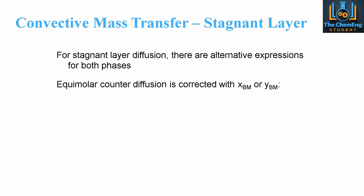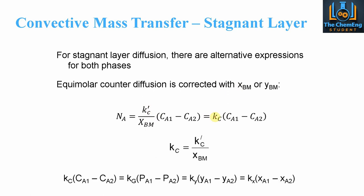For stagnant layer diffusion there are alternative expressions for both phases. The equimolar counterdiffusion equations are corrected using the XBM or YBM correction factors. This allows us to express KC — the overall mass transfer coefficient — rather than the local k'c. If we don't know the overall mass transfer coefficient, we need it in a localised sense. This same approach applies to all variations of the equimolar counterdiffusion convective mass transfer formula, so make sure you're comfortable changing units and incorporating the XBM or YBM correction factor.